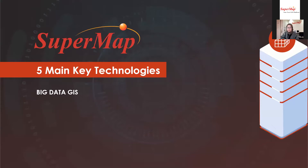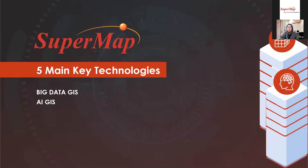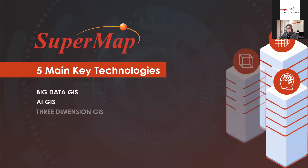The first is Big Data GIS — we support the whole process of big data including streaming, data storage, management, spatial analysis, and data visualization. The second is AI GIS integration, which stands for Artificial Intelligence and GIS integration. In SuperMap itself, the AI technology mainly provides three functions: QAI, AI for GIS, and GIS for AI.